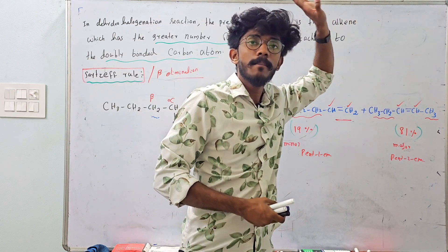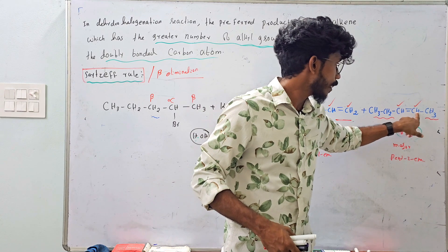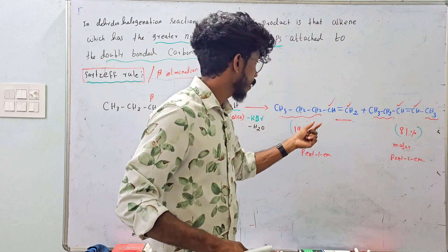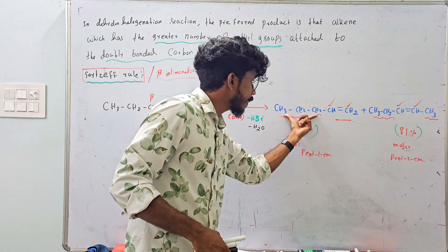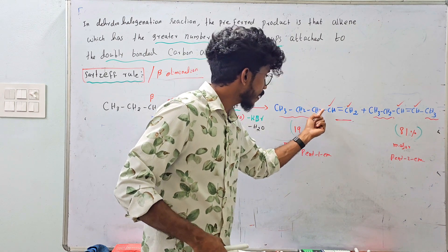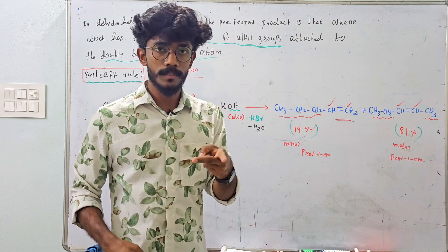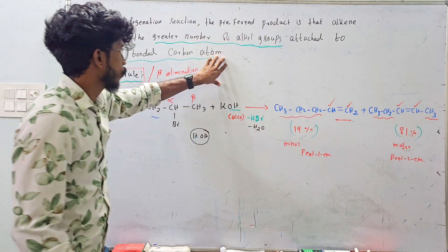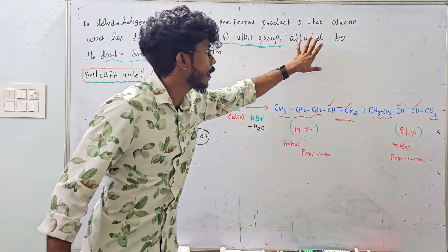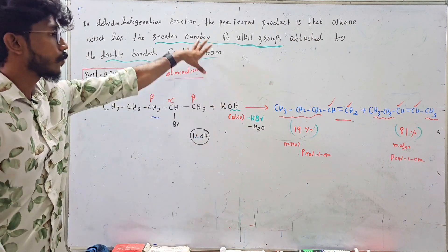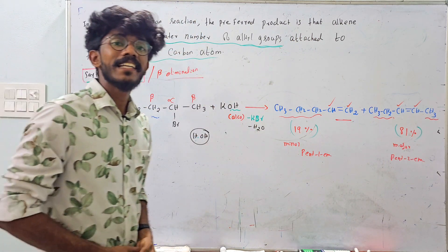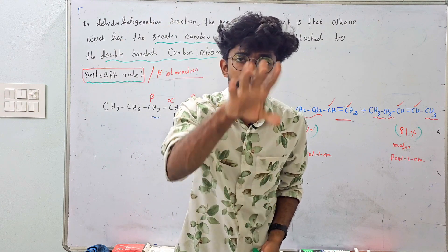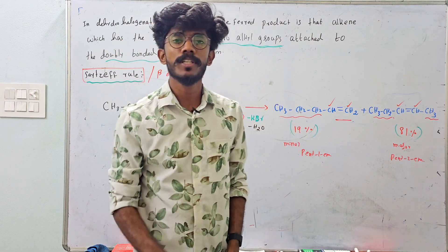That is the major product. Looking at the double bonded carbons: one carbon has one alkyl group and one alkyl group attached, while another carbon has no alkyl group. The carbon with more alkyl groups attached to the double bond gives the major product. This rule is called the Saytzeff rule and is very important in the first chapter of haloalkanes.